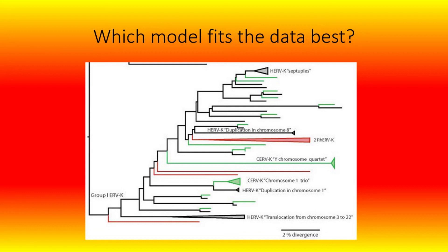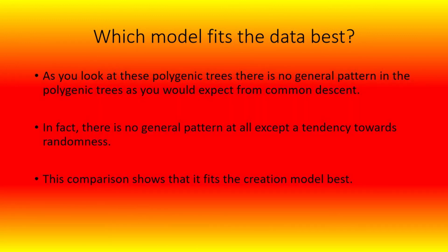Notably, the papers from which all of these charts come were given by evolutionists claiming that they supported common descent. As you look at these phylogenetic trees, there is no general pattern as you would expect from common descent — in fact there is no general pattern at all, except the tendency towards randomness. This comparison shows it fits the creation model best.